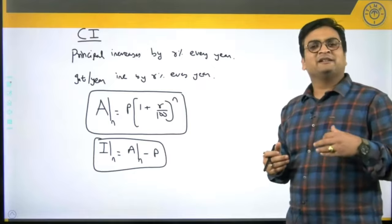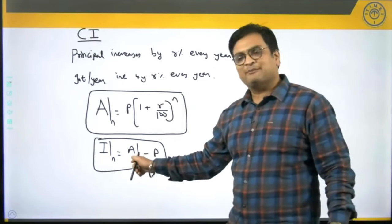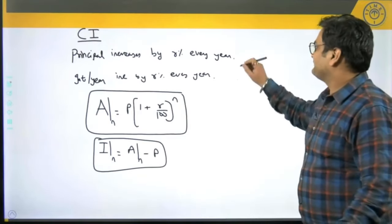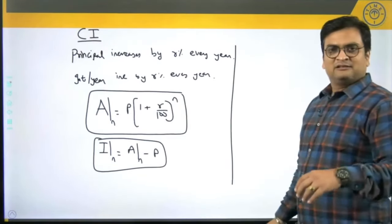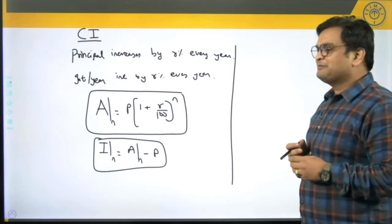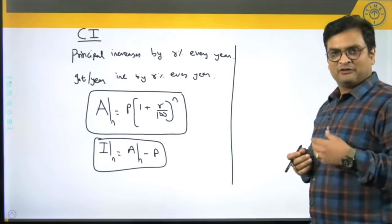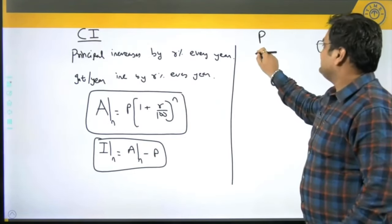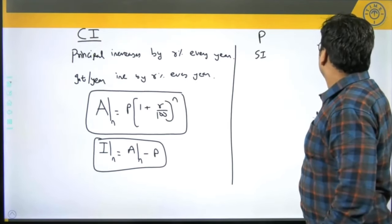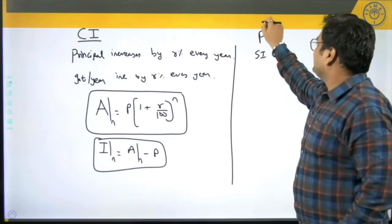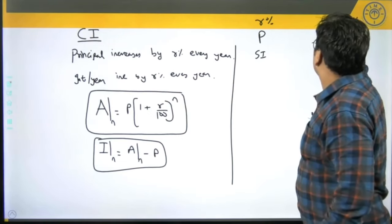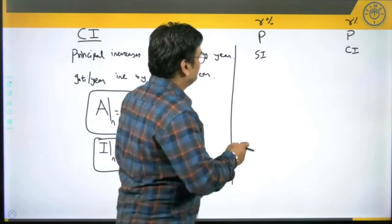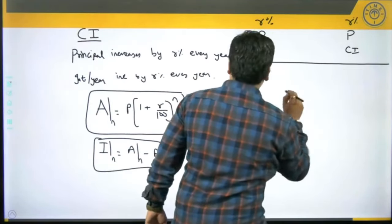Sometimes questions ask for a comparison between simple interest and compound interest. Let us say I borrow P rupees under SI and the same P rupees under CI. The rate of interest in both cases is R percent and the loan duration is 3 years. How will the calculations look?